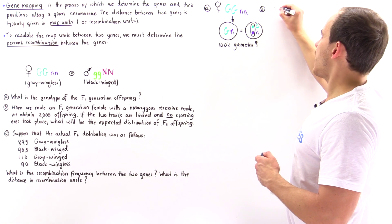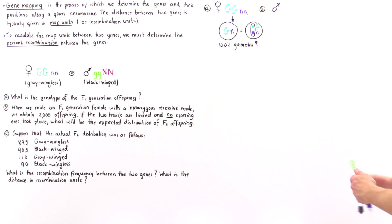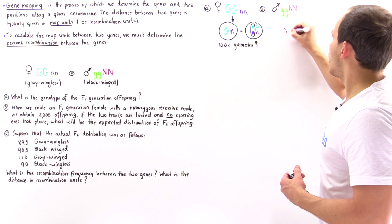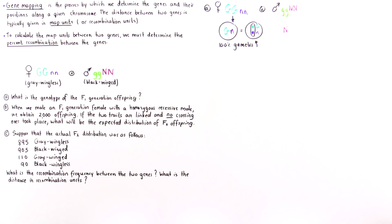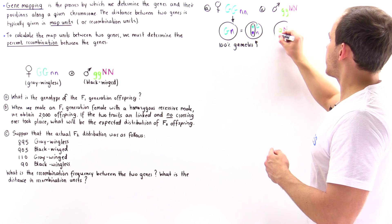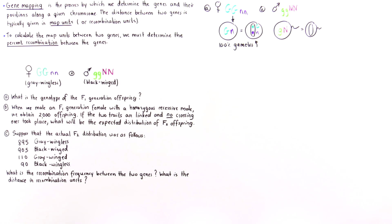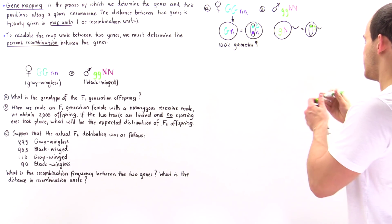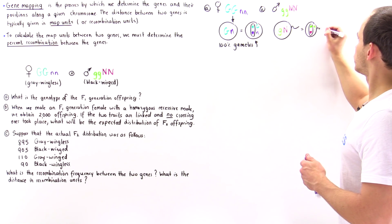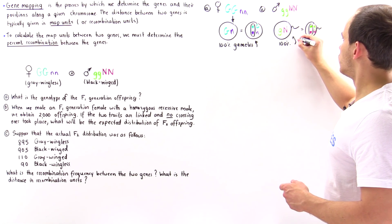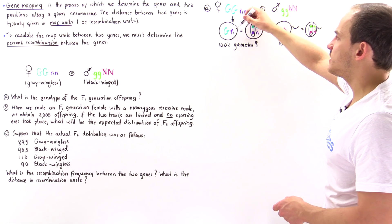We're crossing with a male that is lowercase g, lowercase g, uppercase N, uppercase N. By the same reasoning, carrying out meiosis, only one type of gamete can be formed. So 100% of the male's gametes will have the genotype lowercase g, uppercase N — a sperm cell with lowercase g and uppercase N.